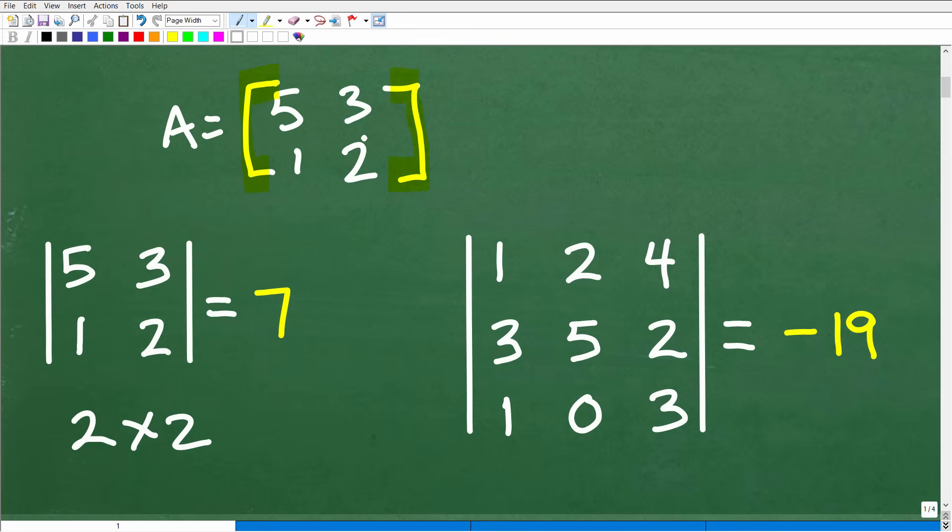If I want to find the determinant of matrix A, I would use this notation. They look like absolute value bars, straight up and down. This notation here is the determinant of matrix A. I don't want to confuse anyone - these bars and brackets look similar but mean two different things.